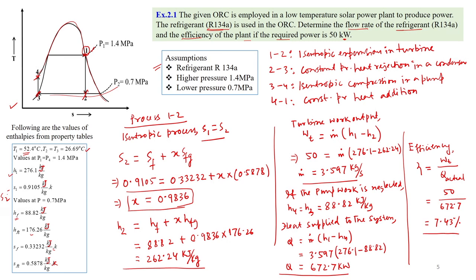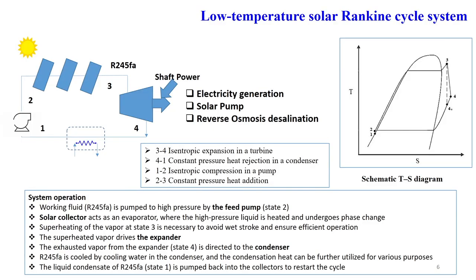This problem was chosen to help you understand how these kinds of calculations can be carried out for estimating the performance of a low temperature solar power plant. Now we can have one more configuration to produce power — with components including a feed pump, solar modules, turbine, and condenser. The T-S diagram shows: process 1 to 2 is isentropic compression in the pump, 2 to 3 is constant pressure heat addition, 3 to 4 is isentropic expansion, and 4 to 1 is constant pressure heat rejection in the condenser.